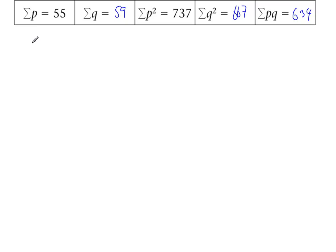First of all, we work out Spp. So from the definition, it's the sum of all the P values squared minus the sum of all the P values squared divided by n. So sigma P squared, that's 737. Sigma P is up there, that's 55, so 55 squared divided by 6. That's how many bits of data we had. That comes to 232.83 recurring.